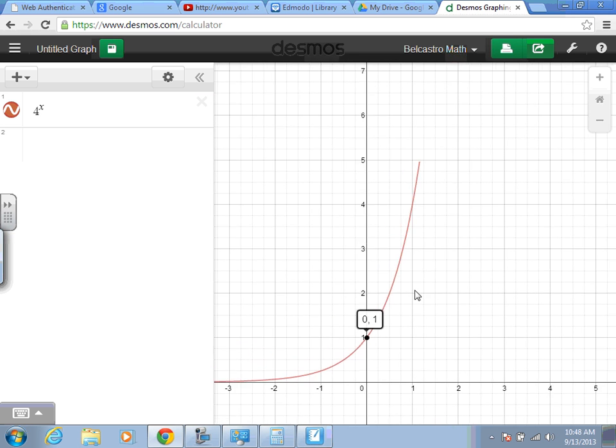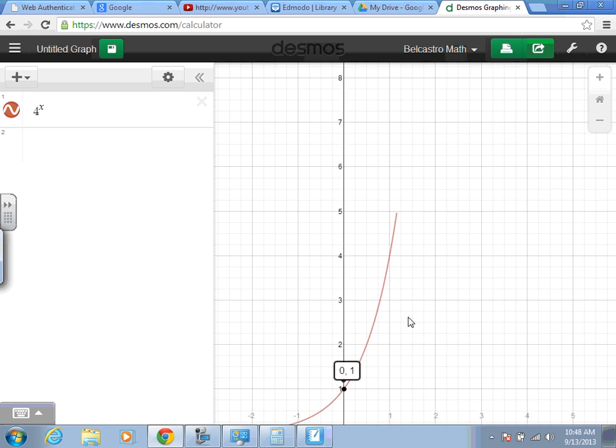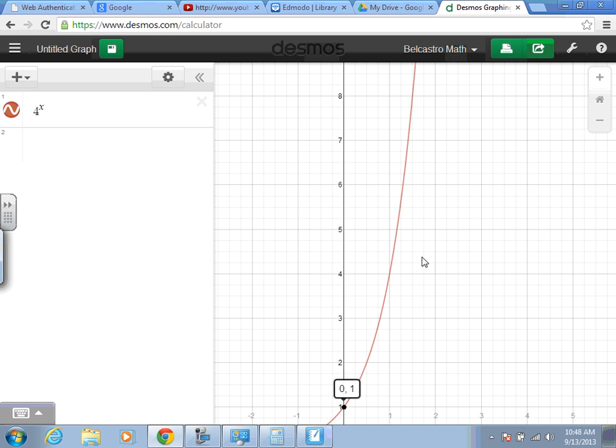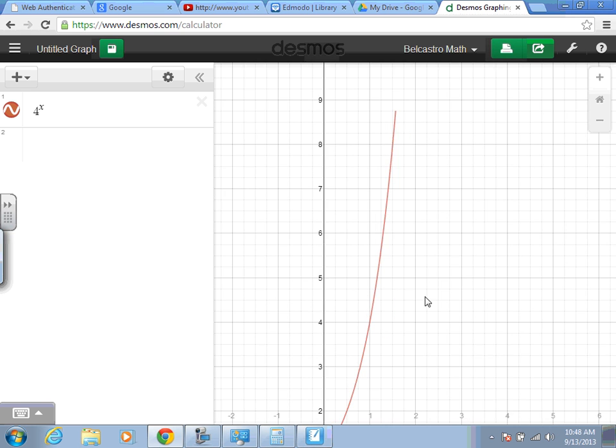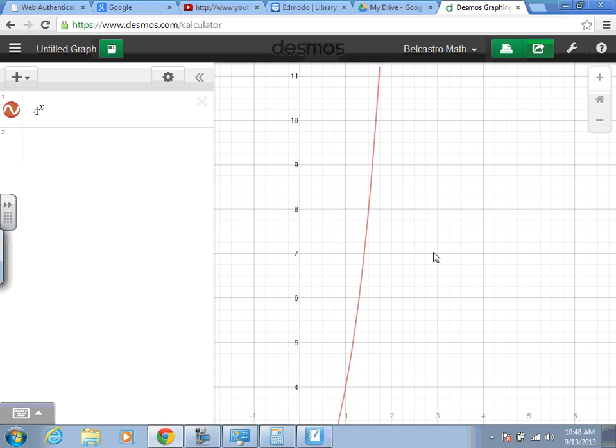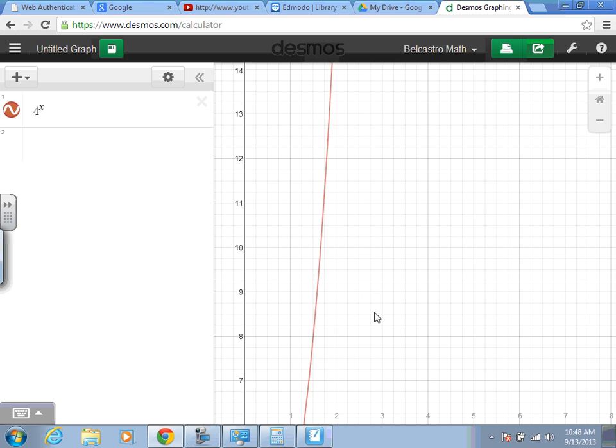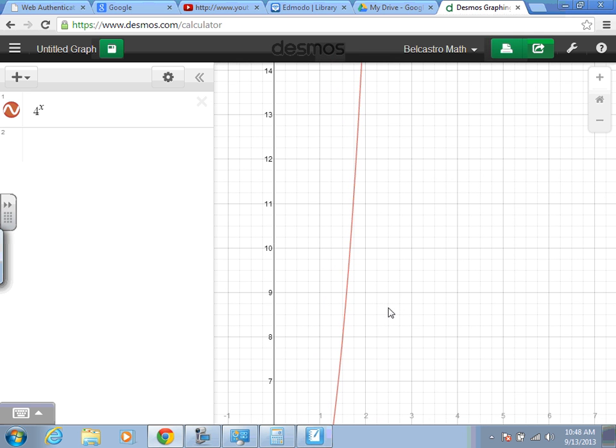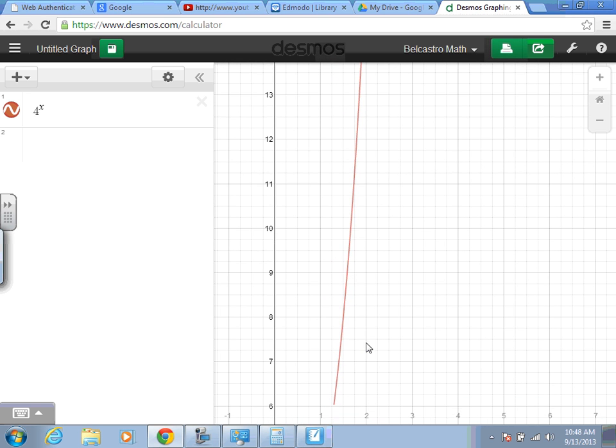So for instance, let's say we wanted to find 4 to the power of 1.5 would fall directly in between 1 and 2. When we go up here, we end up at 7... Almost there.